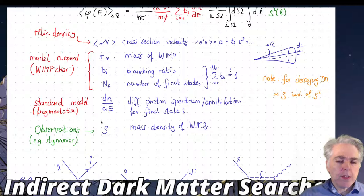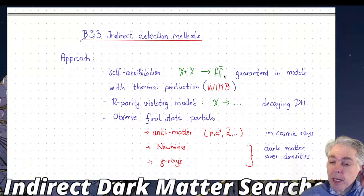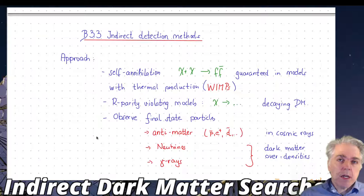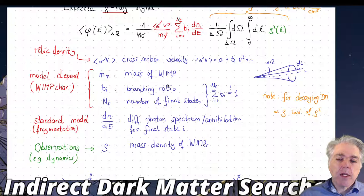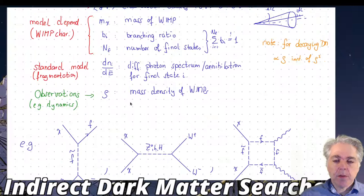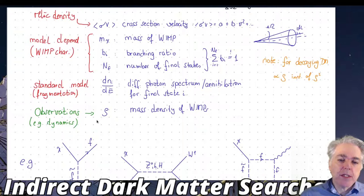The photon distribution which comes out is more or less standard model physics because this is everything after I create whatever fermion antifermion or W+ W- I produce. How this produces photons is well understood. The only thing which is really model dependent is the branching ratio. Sometimes it's simply assumed that everything goes into one particular final state and then there's a limit quoted. The last thing is this rho squared and that comes from observation, from astrophysics, dynamics of stars.